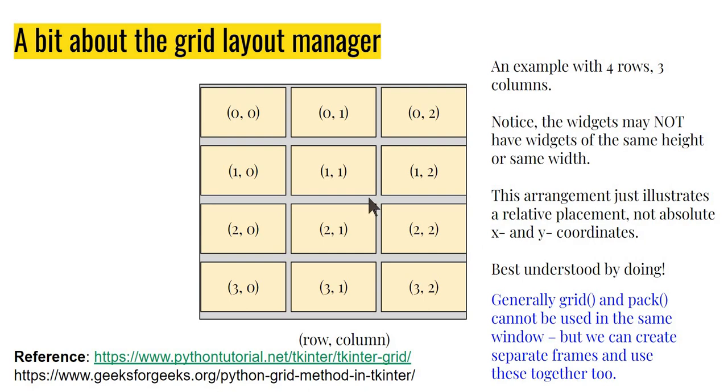Previously, we have seen the pack method and the place method. Pack is kind of like the best effort - put it wherever you get space. Place is like placing widgets in a precise X and Y location. Now, this is a little bit different. This is by placing this on this grid, not the absolute X and Y coordinate. Again, this is best understood by doing.